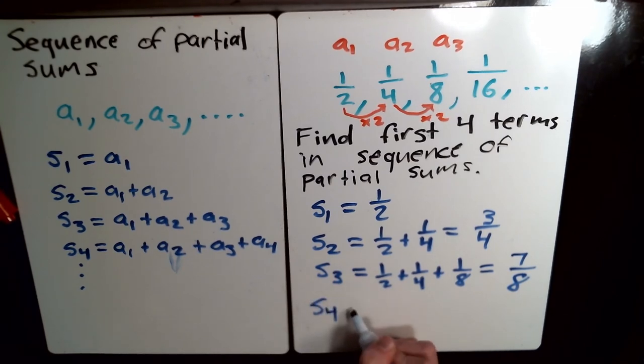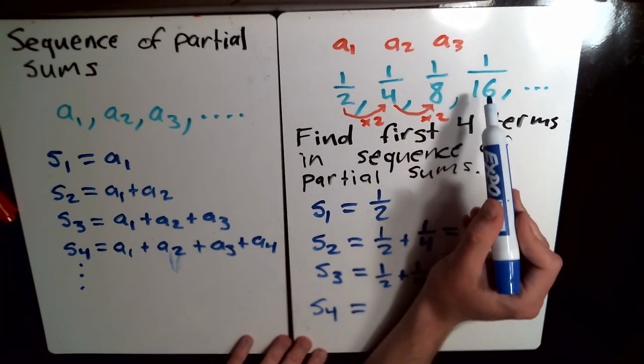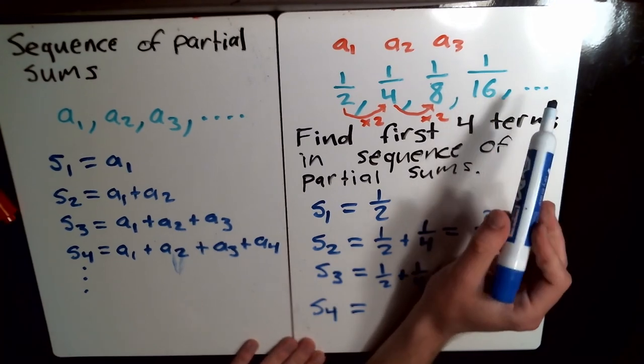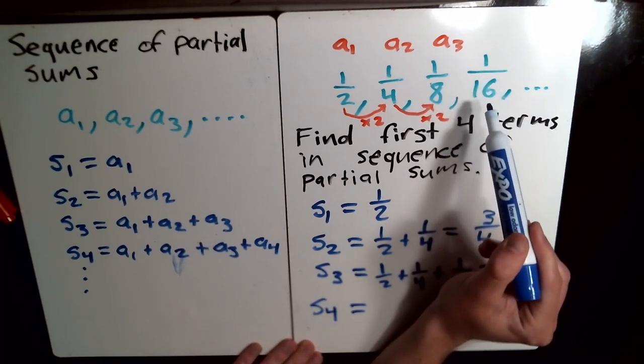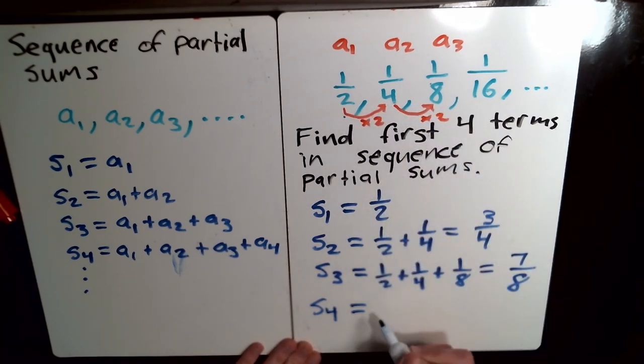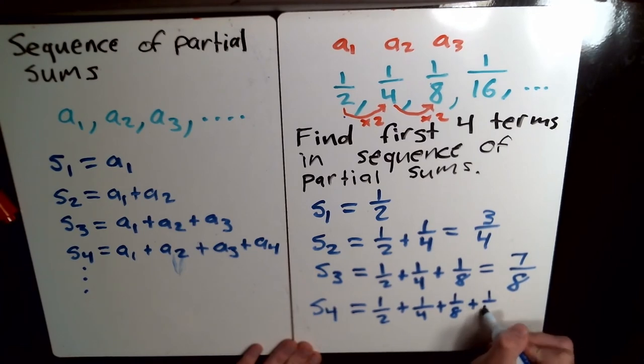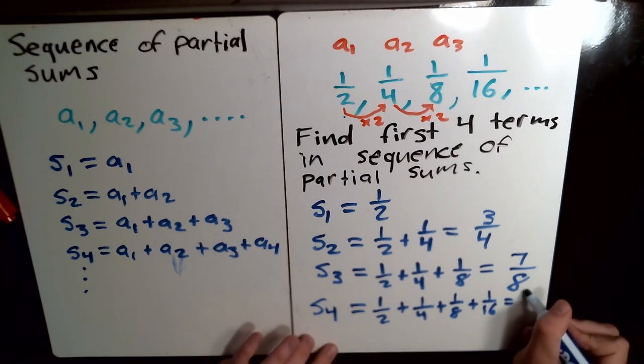Your fourth term in your sequence of partial sums, you just take the first four terms and add them together. Now, notice we didn't have this one to begin with, but if you need to find more terms in the sequence, you're going to have to figure out what's the pattern here so that you can figure out any more terms that you need.